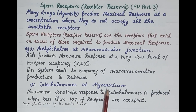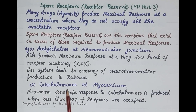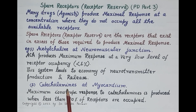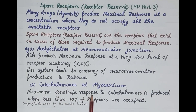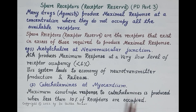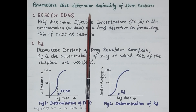Another example is the myocardium, which possesses a large number of spare receptors. The myocardium is made up of cardiac muscles. Catecholamines like adrenaline and noradrenaline produce contraction of myocardial muscles, causing the heart to pump blood — this is called the inotropic response. Maximum inotropic response is produced when less than 10% of receptors are occupied, meaning more than 90% of receptors exist as spare receptors in the myocardium.